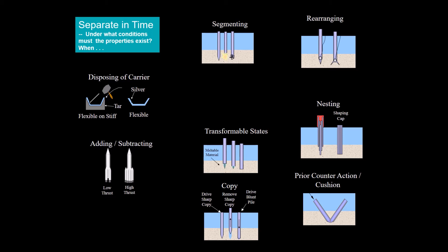Adding and subtracting is used to create high and low thrust rockets depending on the situation that it needs to be used.